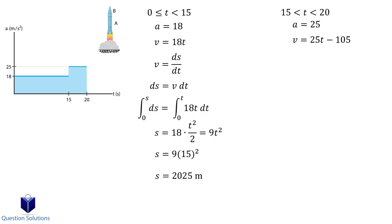As before, using 2025 meters as our lower bound for the displacement at a time value of 15, we can write our integral. Solving gives us the displacement equation for the next segment.